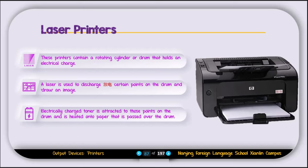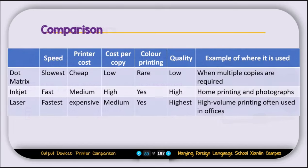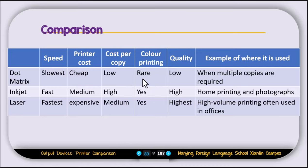Now let's compare the three printers: dot matrix, inkjet, and laser printer. The criteria include speed, printer cost, cost per copy, color printing, quality, and example use. The dot matrix printer is the slowest, cheapest to buy, has low cost per copy, rarely prints color, has low print quality, and is used when multiple copies of the same document are required.